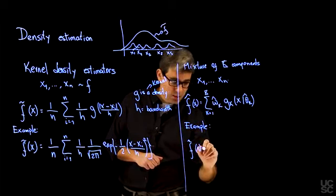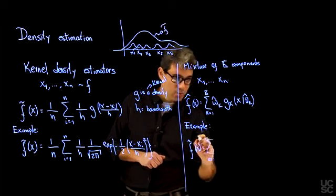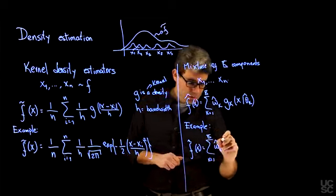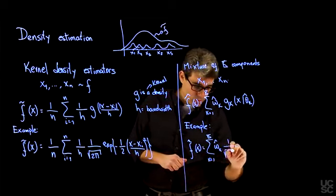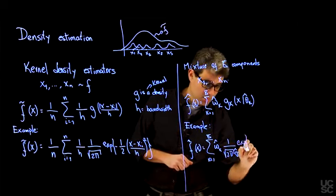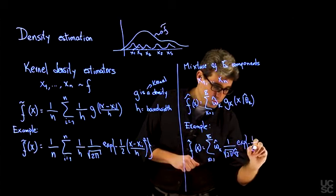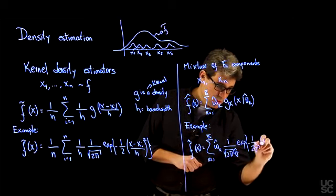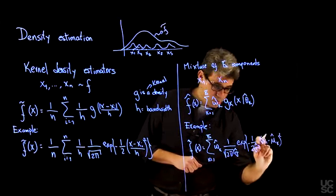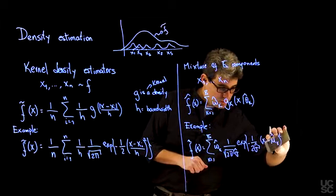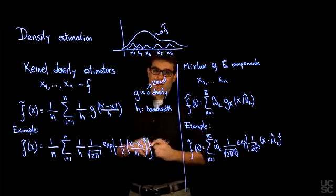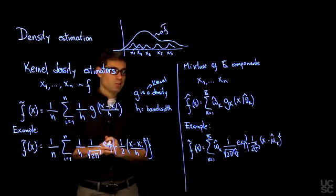In that case, your F hat of X would take the form of the sum from K equals 1 to capital K of omega K hat multiplied by 1 over the square root 2 pi sigma hat times exponential of minus 1 over 2 sigma squared hat times X minus mu hat K squared. Sorry, there is no I in here because this is the argument of the function that we're working with.